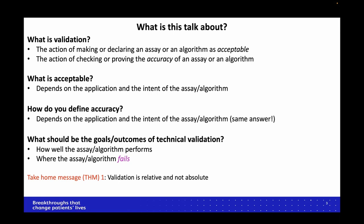So really, what is validation? I looked it up in the Webster Dictionary. It says the act of making or declaring an assay as acceptable — where that something is either the underlying assay you've developed or the algorithm you're trying to validate on the images. Or you could say the action of checking or proving the accuracy of something. This introduces two new words: acceptable and accuracy, and acceptability is very subjective — it depends on what you're trying to achieve.